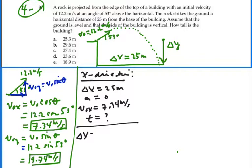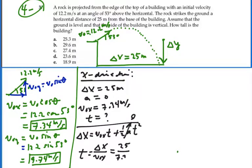Displacement will equal initial velocity times time plus one-half acceleration times time squared. But the acceleration in the x direction is zero. So we strictly have displacement equals velocity times time, velocity being constant. So time will equal displacement divided by our velocity. And this would be 25 divided by 7.34. And that would give us a time of 3.41 seconds.